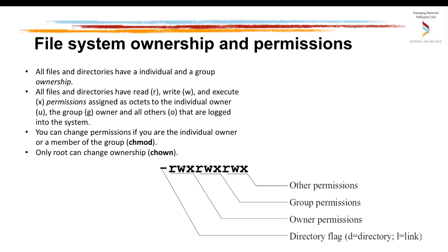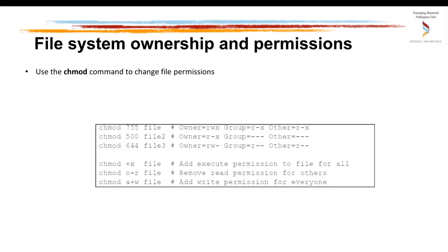The program to change permissions is chmod. The program to change ownership is chown. Here I show some examples where you can use chmod to change permissions of a file using numbers from 7 to 4. For instance, when you use 755, the owner has full permission which is 7, the group has only read and execute permission which is 5, and others also have only read and execute permission which is 5. In the second example, with chmod 500 on file2, the owner has only read and execute permission, but the group and others have no permission to read file2.